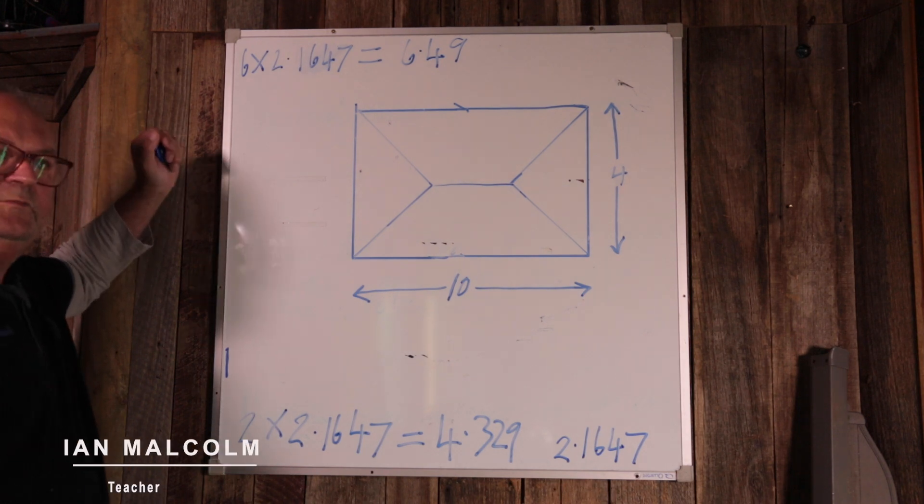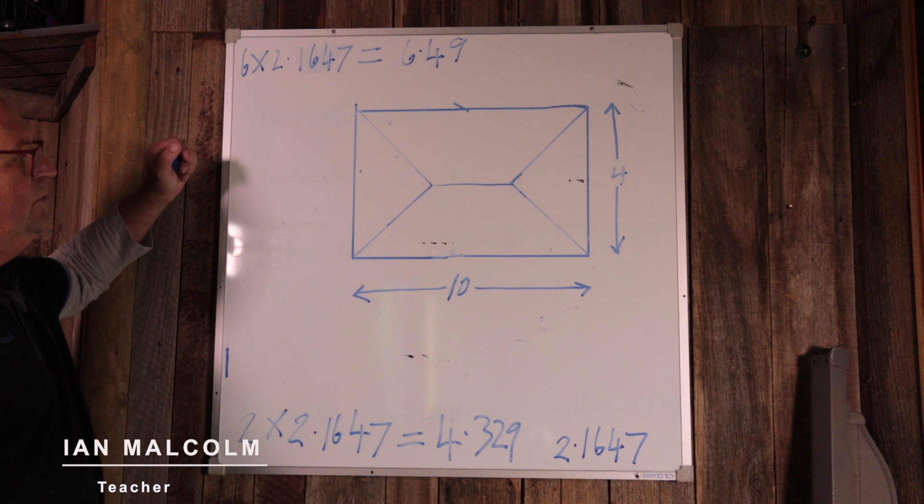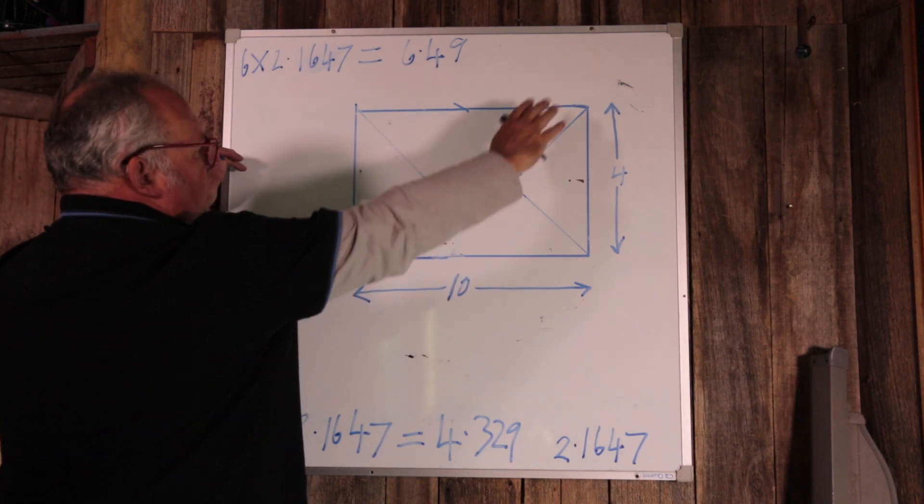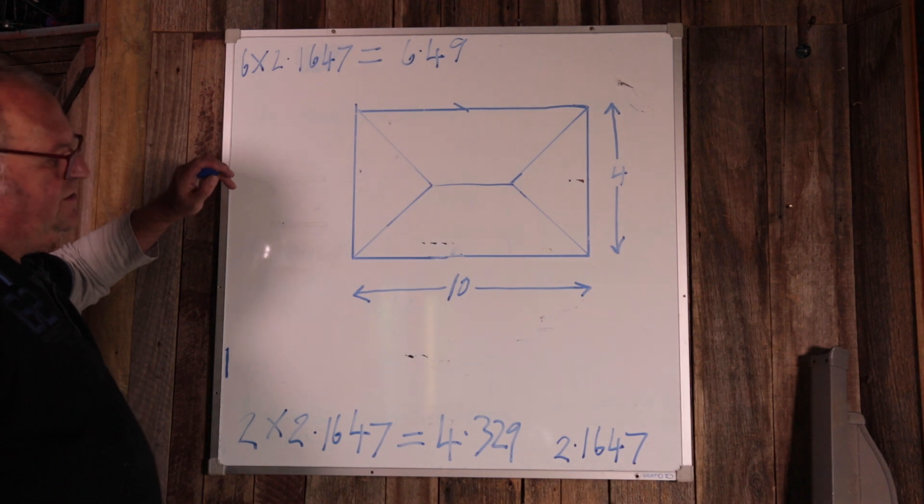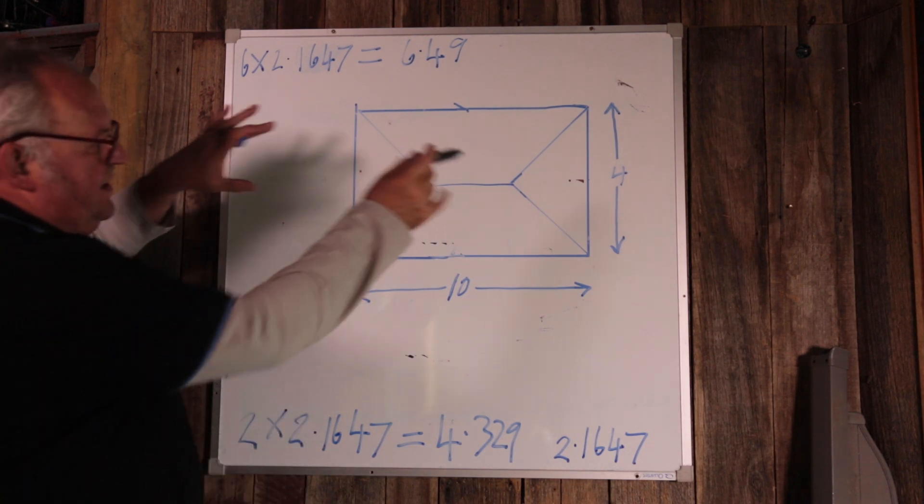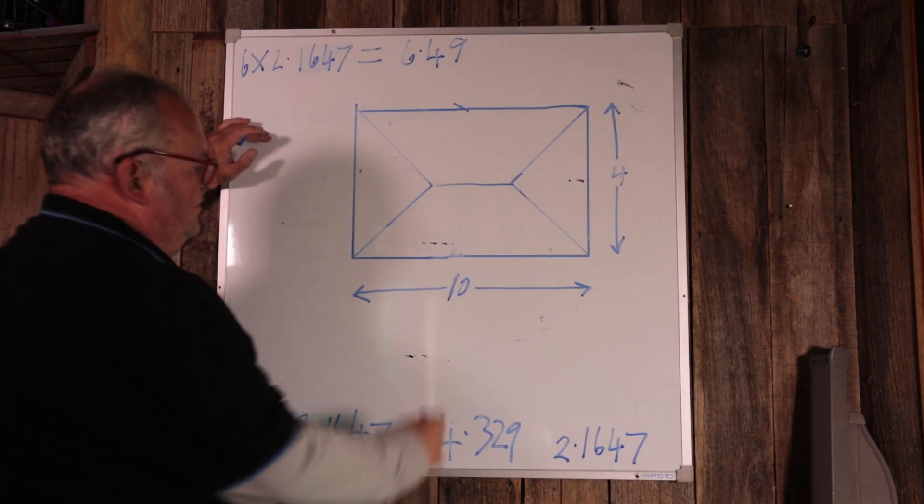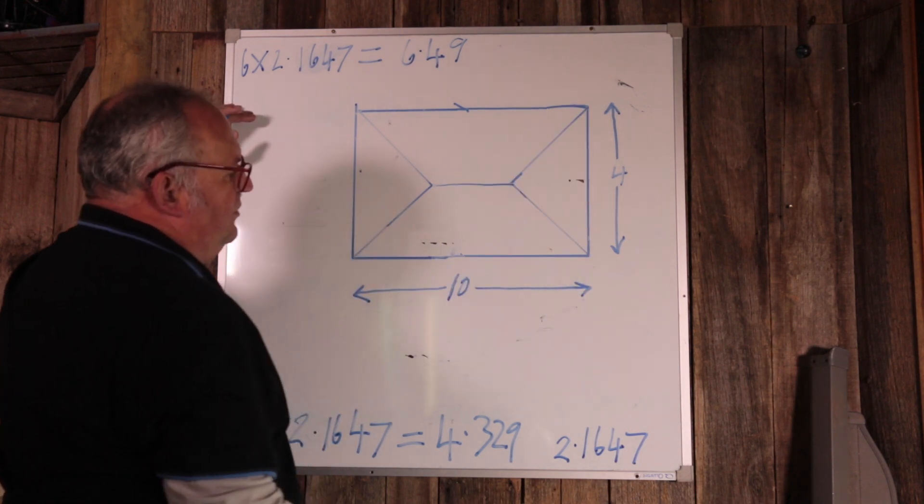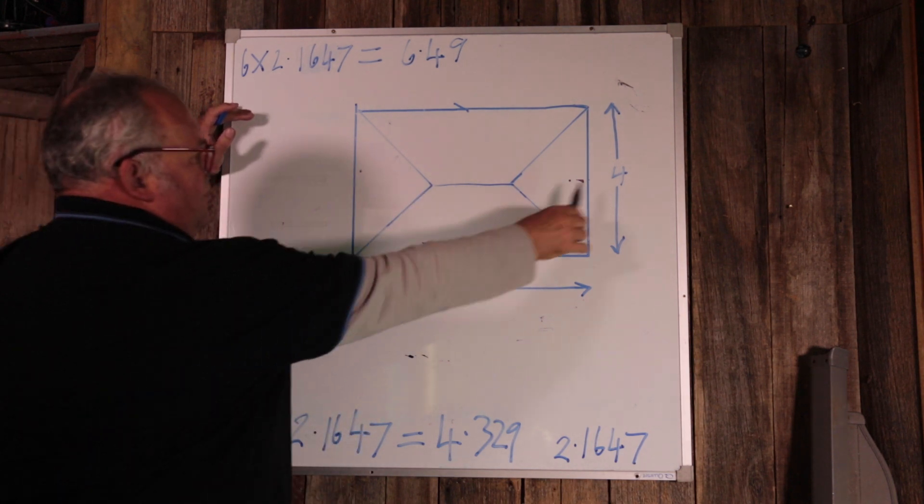G'day, my name's Ian and today we're going to have a look at working out the surface area of a hip roof. That means what it is up on the slope. I've drawn a nice simple one, this is plan view looking down on it, 10 meters along, 4 meters.